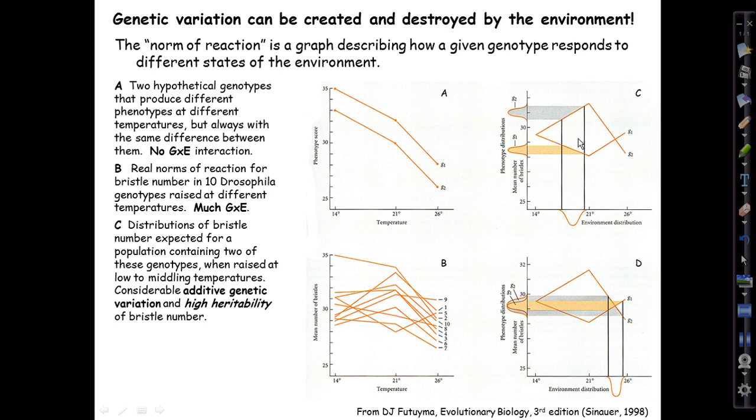Here there would be a lot of additive genetic variance and high heritability of bristle number. In this environment, the environment of panel C, if we raise them at this temperature, we can just look at the larvae, count their bristles, and tell are they genotype 1 or genotype 2. Obviously, if we were to select for higher or lower bristle numbers, we would change the relative proportion of those two genotypes in that population, in that environment. It would be a piece of cake. We have a lot of genetic variance, high heritability. The population could evolve.